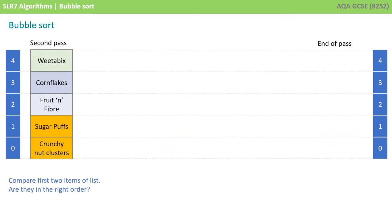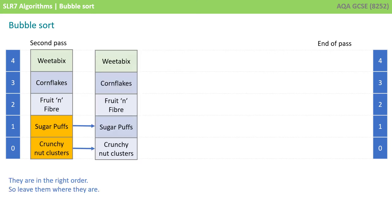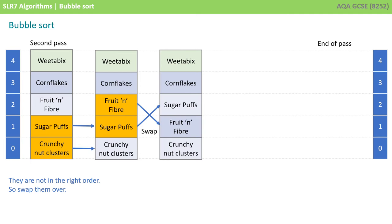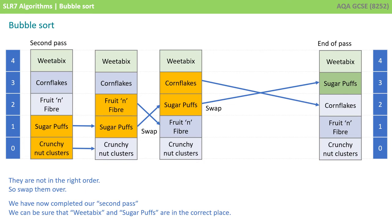Weetabix is in the correct place, so we can ignore that. But we repeat the algorithm, starting with comparing sugar puffs and crunch nut clusters, because they're the first two items of the list. Are they in the right order? They are, so we leave them where they are. We compare the next two items in our list. Are they in the right order? They're not, so we swap them over. We compare the next two items in our list. Are they in the right order? They're not, so we swap them over. We've now completed our second pass. We can be sure that Weetabix and sugar puffs, which has just bubbled up to the top, are in the correct place. We now have to do a third pass.